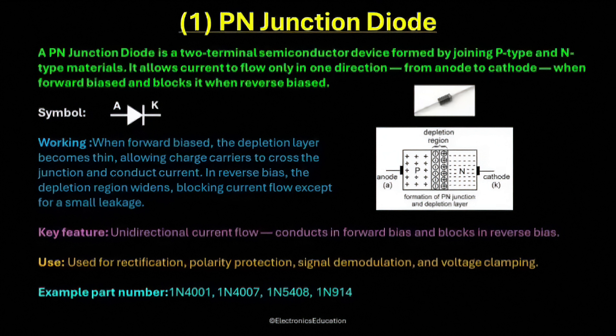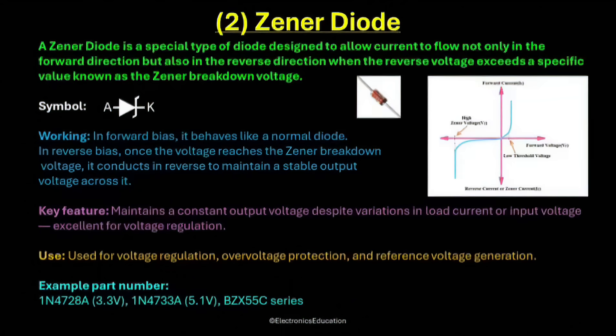Next, we will move on to another important component, the Zener diode, and see how it helps regulate voltage in electronic circuits. A Zener diode is a special type of diode designed to allow current to flow not only in the forward direction, but also in the reverse direction, when the reverse voltage exceeds a specific value known as the Zener breakdown voltage. It is one of the most useful components in voltage regulation and protection circuits.